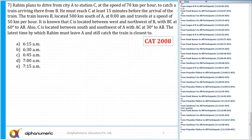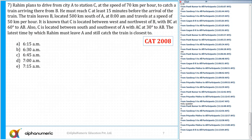Now let's move to question number seven. It says Rahim plans to drive from city A to station C at a speed of 70 kilometers per hour to catch a train arriving there from B. He must reach C at least 15 minutes before the arrival of the train.